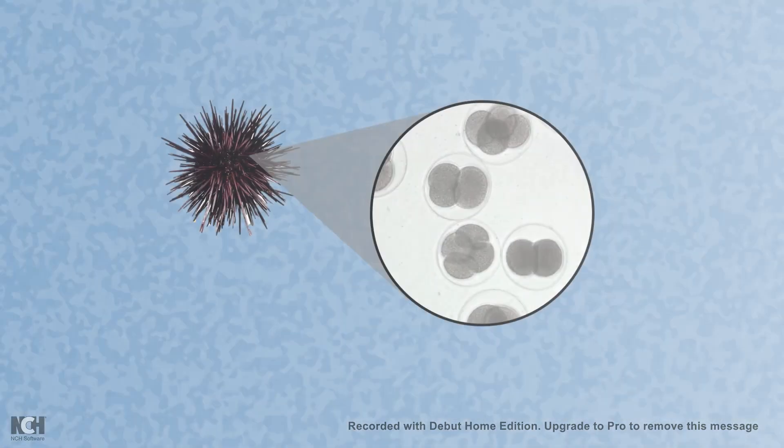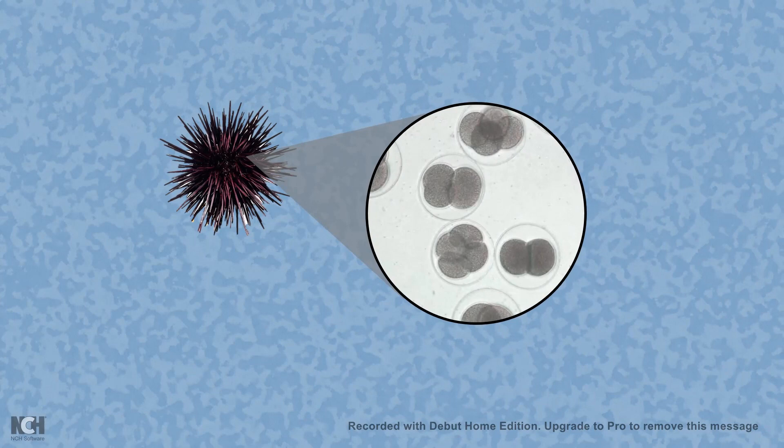Tim Hunt was working with sea urchin embryos. Now, in sea urchin embryos, they are pretty much big and it is really easy to track their division. And that is why what he was doing was completely different. Nothing to aim to discover the MPF. He was studying parthenogenesis.